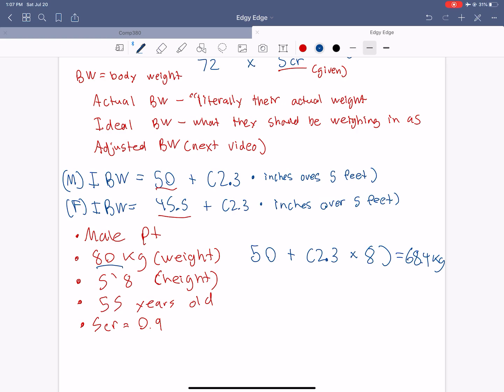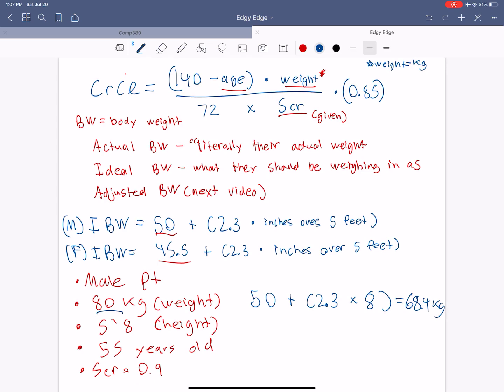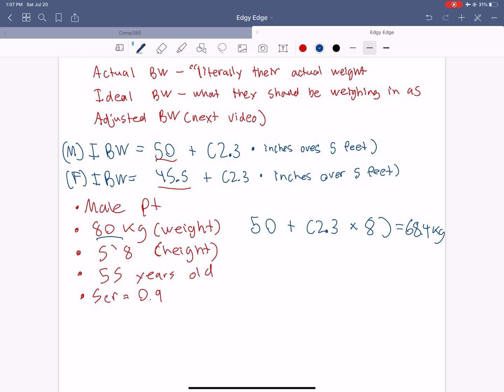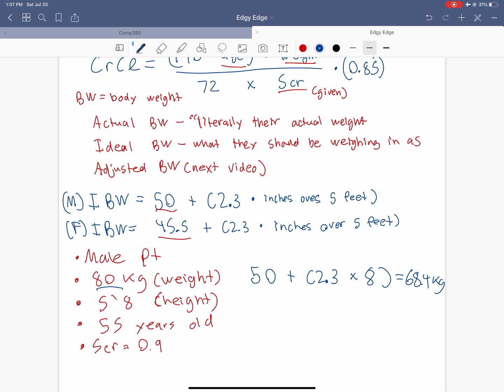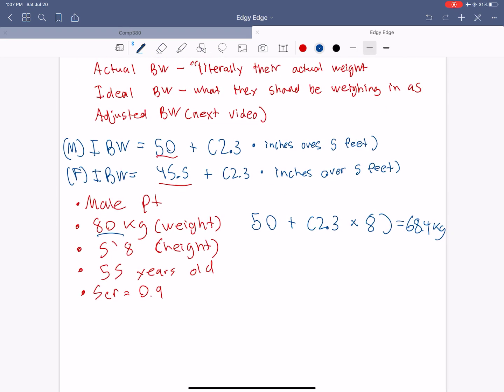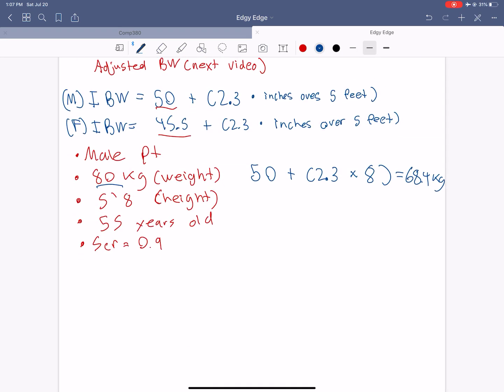So what we do, and this is kind of controversial depending on institution or which hospital you're at. If it's generally under 30% of the ideal body weight, then you will use the ideal body weight in the formula here. But if it's over 30%, you will use the adjusted body weight, which we'll talk about in the next video. But let's just continue the problem. So we have ideal body weight is equal to 68.4 kilograms. That's based off the formula we use over here.